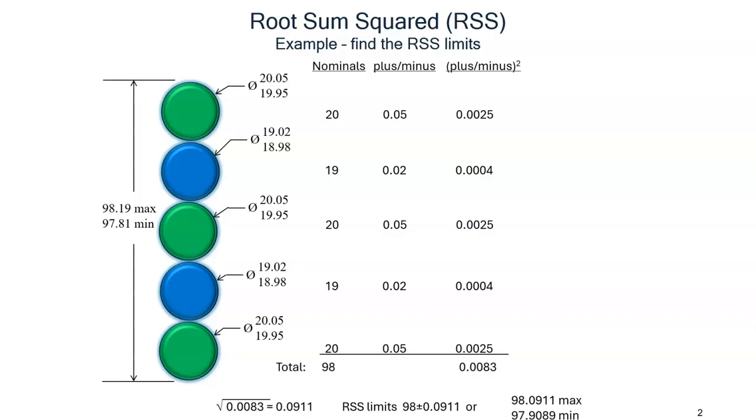We have a column for the nominals as well as the total for the nominals. We have a column for the plus-minus values. We have a column for the squares of the plus-minus values and the total of those values.